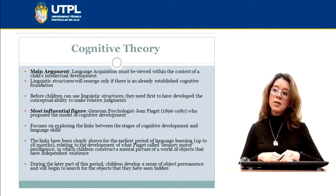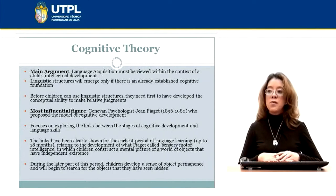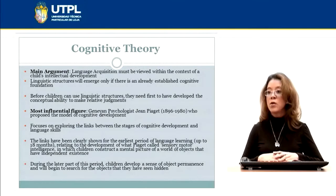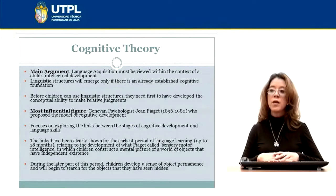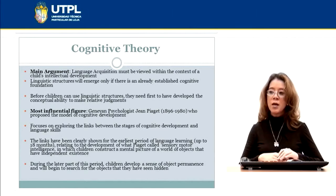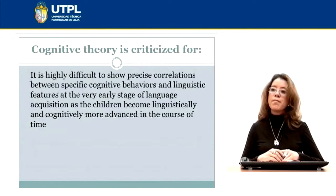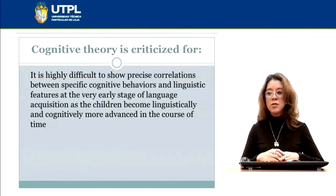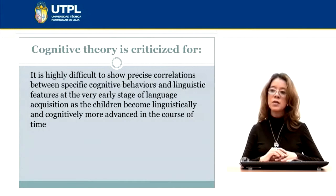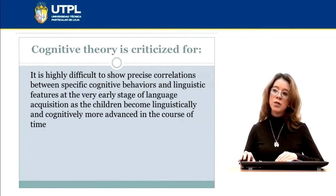We are going to review the cognitive theory, the third theory we will cover. The main argument of this cognitive theory is that language acquisition must be viewed within the context of a child's intellectual development — children need to have first developed conceptual ability to make relative adjustments before using linguistic structures. The most influential figure of this theory is Jean Piaget, who proposed a model of cognitive development within which language development occurs. A critique of Piaget's theory is that it is highly difficult to show precise correlations between specific cognitive behaviors and linguistic features at early stages of language acquisition.